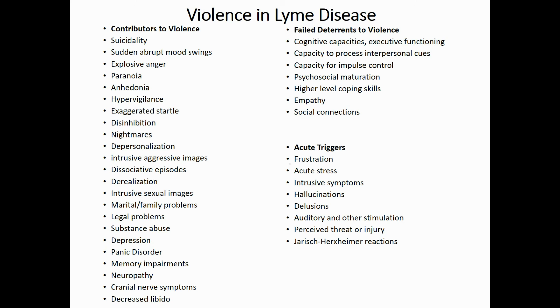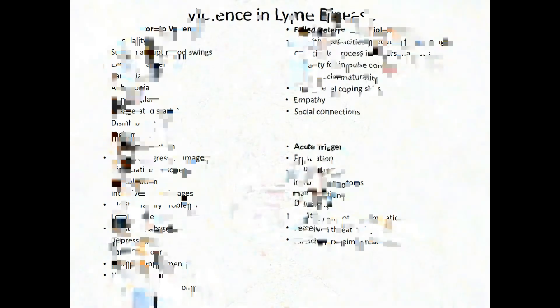Impairments associated with violence were then combined into a model to help explain violence with Lyme disease. Although most Lyme patients have no aggressiveness, some acquire the impairments that collectively can increase violent potential. Improved insight, better prevention, diagnosis, and treatment of Lyme disease can help prevent violence and save lives.